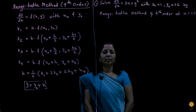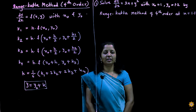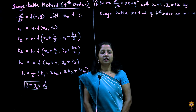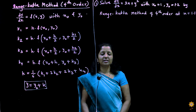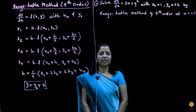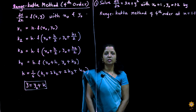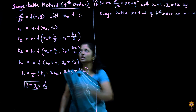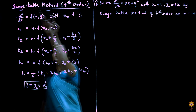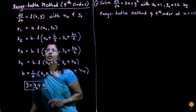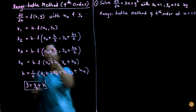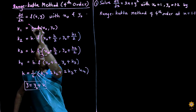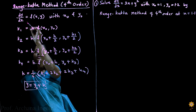Hello everyone, welcome to MES's e-learning channel. In this video, we are going to see the next method of numerical differentiation which is known as the Runge-Kutta method of fourth order. The formulation for this method is as follows.